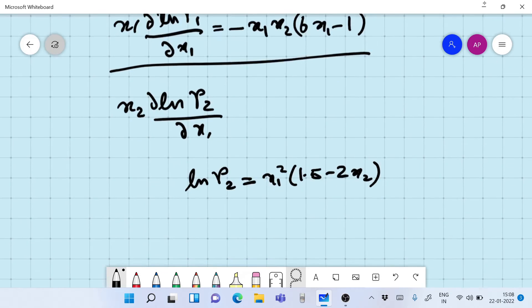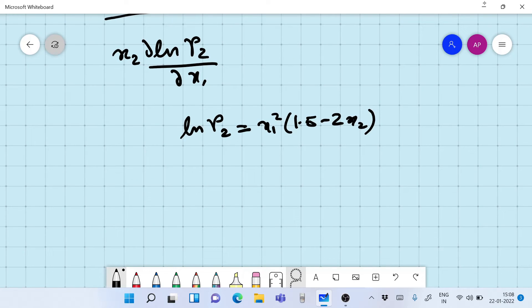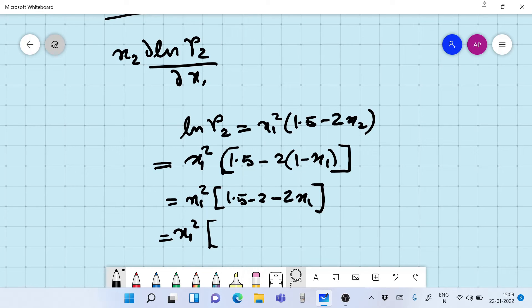Now we have to find out what is x2 d ln gamma 2 by dx1. For that, what we need to do is we need to take ln gamma 2 first, which in our case is x1 square into 1.5 minus 2x2. This is simple to solve.